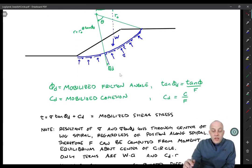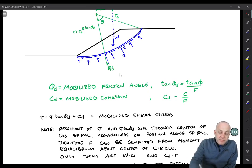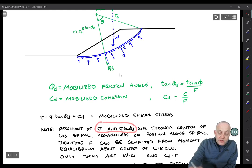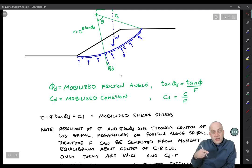Now the interesting feature of a log spiral is that the resultant of sigma and sigma tangent of phi goes through the center of the circle. So at every point along this log spiral arc, the normal stress and the shear stress component arising from the friction component go through the center of the circle.